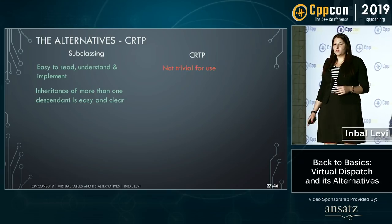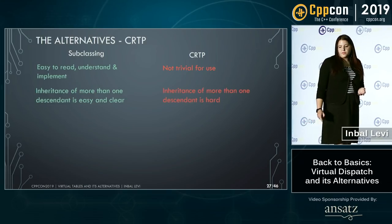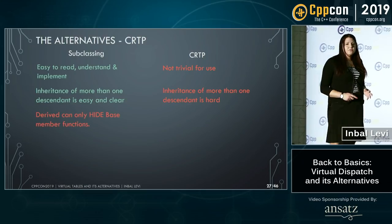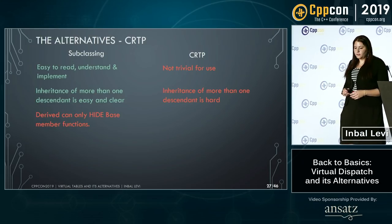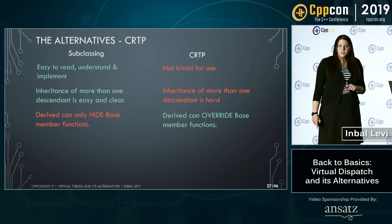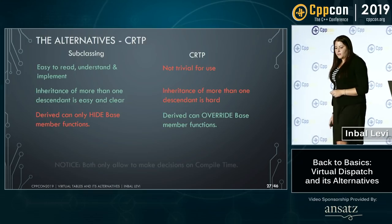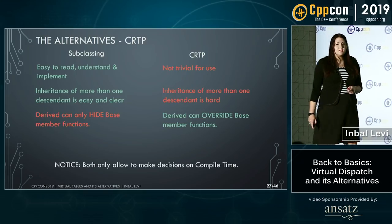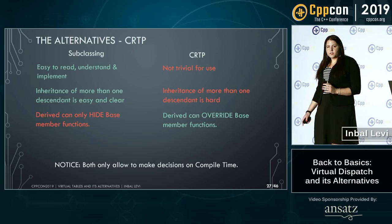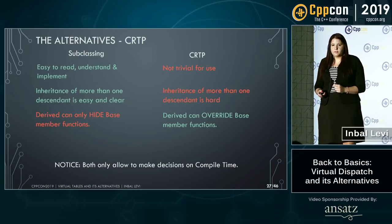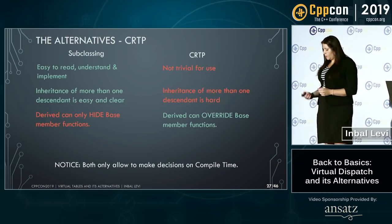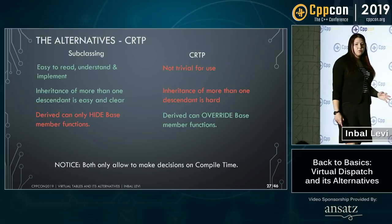To compare: subclassing is easy to read and obvious, while CRTP requires thinking about templates. With subclassing you can inherit from more than one descendant; with CRTP you need to implement that. The big difference is that subclassing hides functions whereas CRTP actually overwrites them. Both are only relevant if you have all the information on compile time.